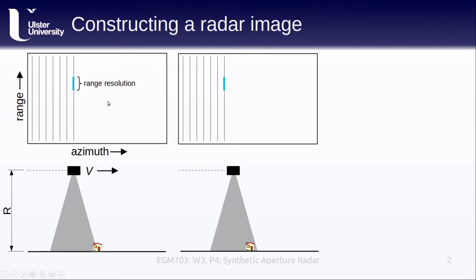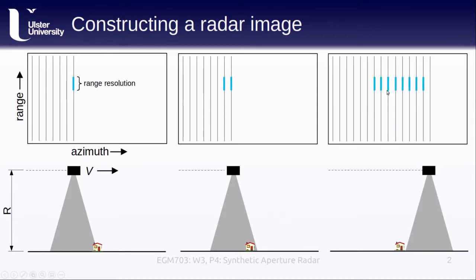As the satellite moves along, it will continue getting a return from the house because the house is still within the beam, even though the satellite isn't yet at the house azimuth location. The satellite will continue to measure a return from the house until the house is no longer in the satellite's beam. The number of lines in the image where we see a return from an object is related to the azimuth resolution of the sensor.